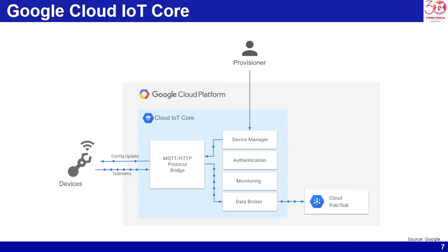Google IoT Core has two main components: a device manager and the protocol bridge. The device manager allows individual devices to be configured and managed securely in a coarse-grained way. Management can be done through a console or programmatically. The protocol bridge provides connection endpoints for protocols with automatic load balancing for all device connections, and has native support for secure connection over industry-standard protocols such as MQTT and HTTP. The protocol bridge publishes all device telemetry to Cloud PubSub, which can then be consumed by downstream analytic systems.